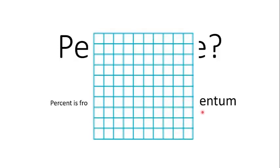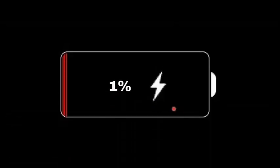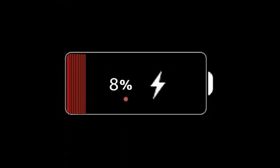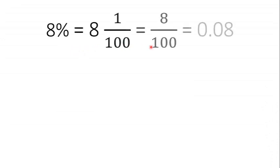Like we have one percent battery in our mobile phone, it means only one part of our battery remains. If we have eight percent battery, it means we have eight parts of the battery, which can be represented as eight, one divided by one hundred or eight divided by one hundred or zero point oh eight.